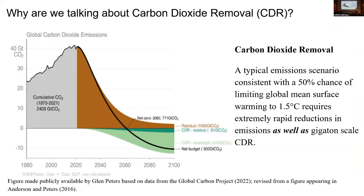Our motivation: atmospheric CO2 is too damn high. This is a plot from the Global Carbon Project, gigatons of carbon on the y-axis, time moving forward to the right. For us to keep global warming to 1.5 degrees C or below, we're going to have to both drastically and radically limit emissions, drop emissions down to zero, and we also need carbon dioxide removal. This is our motivation for the talk.